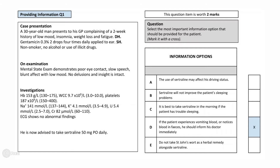The correct answer is D. This option describes some of the major side effects of sertraline: GI disturbance and bleeding. SSRIs inhibit the serotonin transporter, which is responsible for the uptake of serotonin into the platelets. SSRIs can therefore deplete platelet serotonin, leading to a reduced ability to form clots and raises the risk of bleeding. This is very dangerous and patients should be made aware of this so that they can inform their doctors if they notice any blood in faeces or if they vomit blood. They should also go to A&E if bleeding doesn't stop, for example from cuts or nosebleeds.